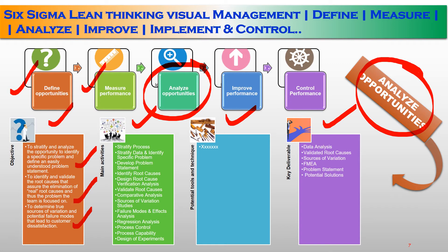The main activities to analyze opportunities for improvement: first, stratify the process; second, stratify data and identify a specific problem; then develop a problem statement; identify root causes; design root cause verification and analysis; validate root causes through comparative analysis; conduct source of variation studies; perform FMEA — failure modes and effects analysis; conduct regression analysis, process control, process capability, and design of experiments. These are the main key activities to determine opportunities and viabilities to deliver a maximum improvement plan.